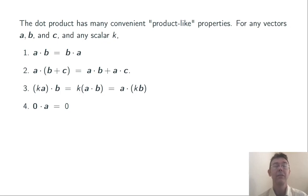Finally, 0 · A is always equal to 0 for any vector A.